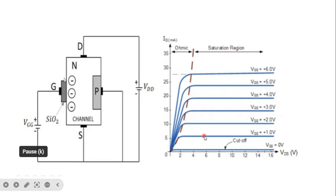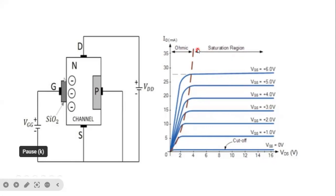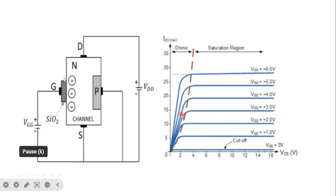From the ID versus VDS characteristics, there are three different types of regions. The first one is called the ohmic region — in this region, current and voltage are approximately proportional. As voltage increases, current also increases. According to Ohm's law, V is proportional to I, that's why this region is called the ohmic region.